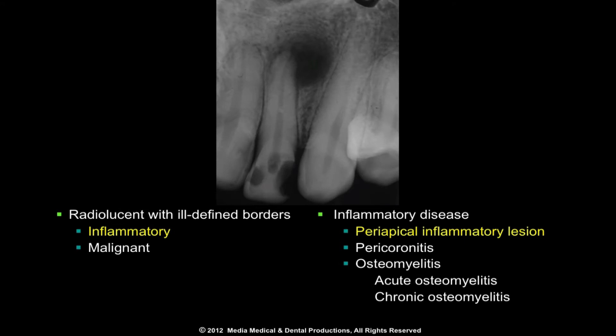A radiolucent lesion with ill-defined borders represents the image of pathosis that generally falls into two categories: inflammatory or malignant disease.